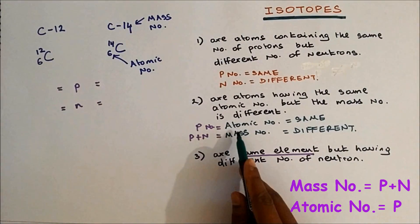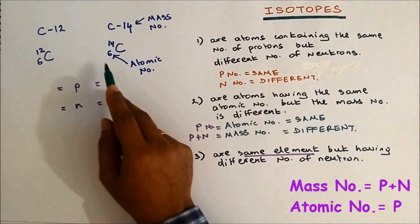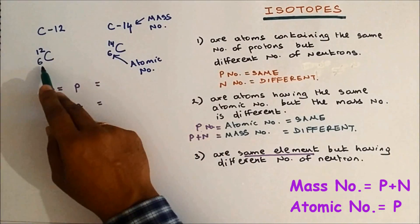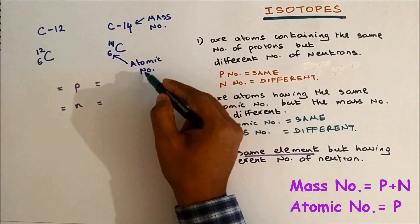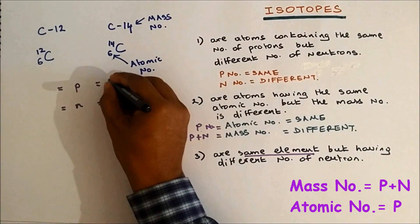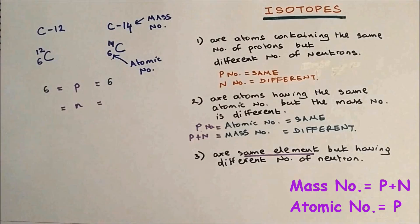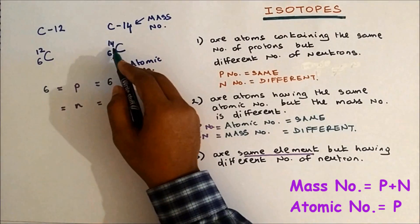Like I mentioned before, atomic number is the number of protons. So in this case, carbon-12 and carbon-14 contain an atomic number of 6, so proton number is 6 and 6.